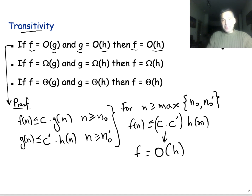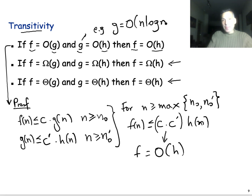Showing the two other properties for Big Omega and Big Theta follows basically exactly the same logic. Why is transitivity useful? Imagine that you have an algorithm for which you know that the running time g is Big O of something — for example, merge sort, for which you know that the running time is Big O of n log n. If you have another algorithm whose running time is asymptotically upper bounded by merge sort, then based on this property you can immediately say that the running time of this new algorithm is also Big O of n log n.